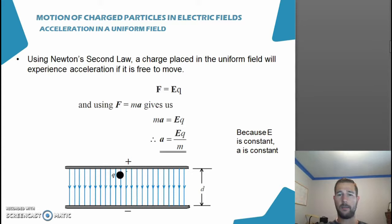Using Newton's second law, a charge placed in the uniform field will experience acceleration if it is free to move. We use the formula F equals EQ and F equals MA and we can equate these. So MA equals EQ and we find our acceleration is proportional to the strength of the field, the charge, and inversely proportional to the mass of the charge. Because we have a uniform electric field, E is constant and that means that A is constant.